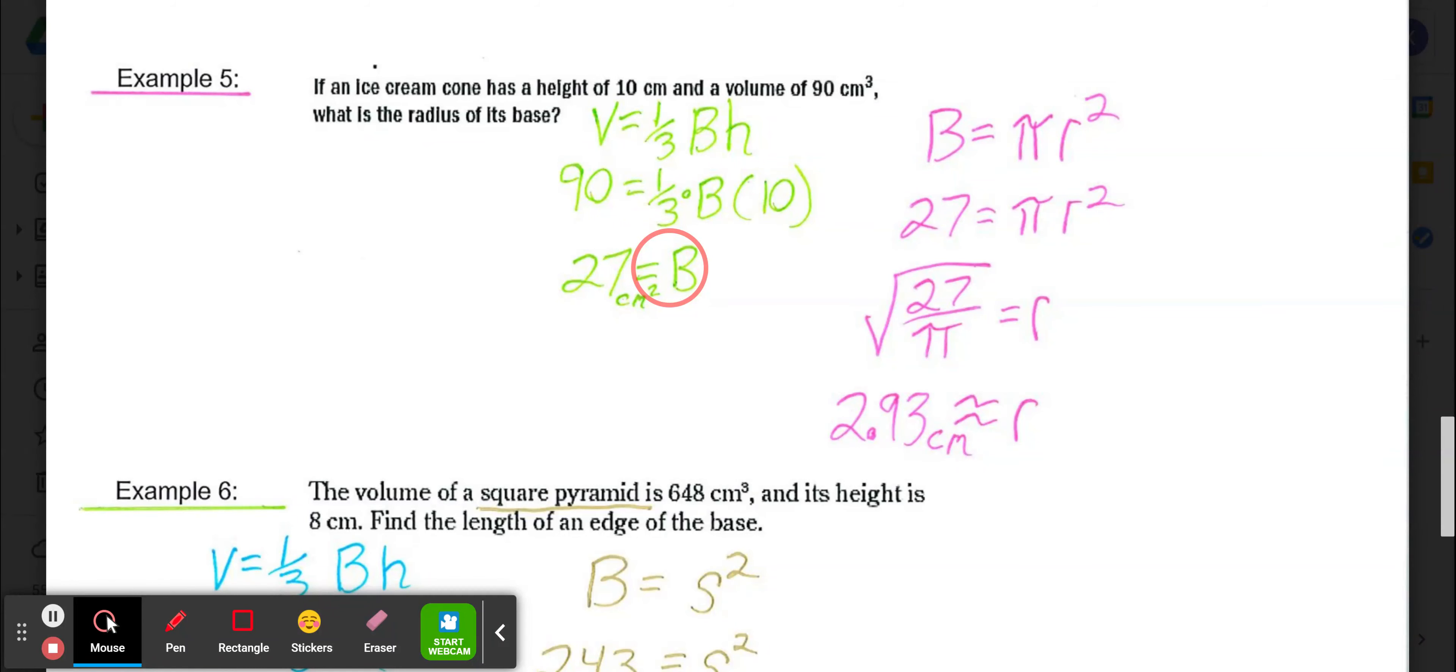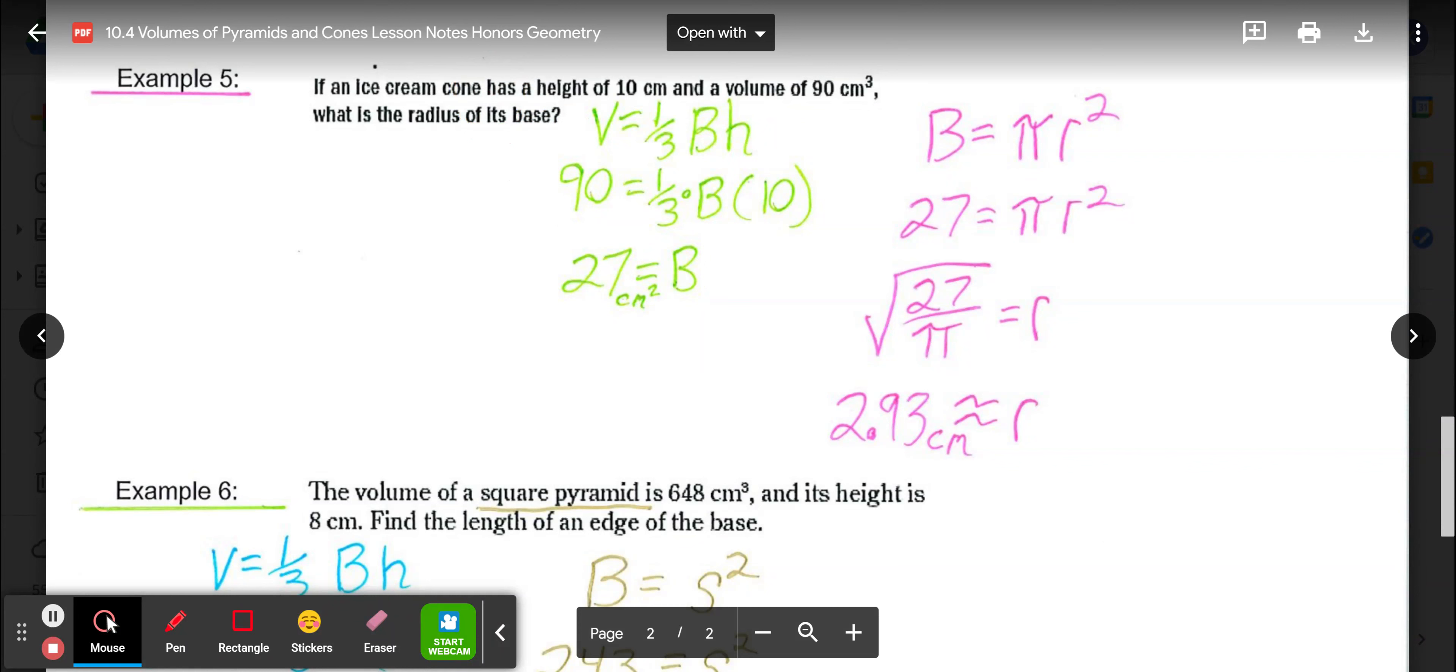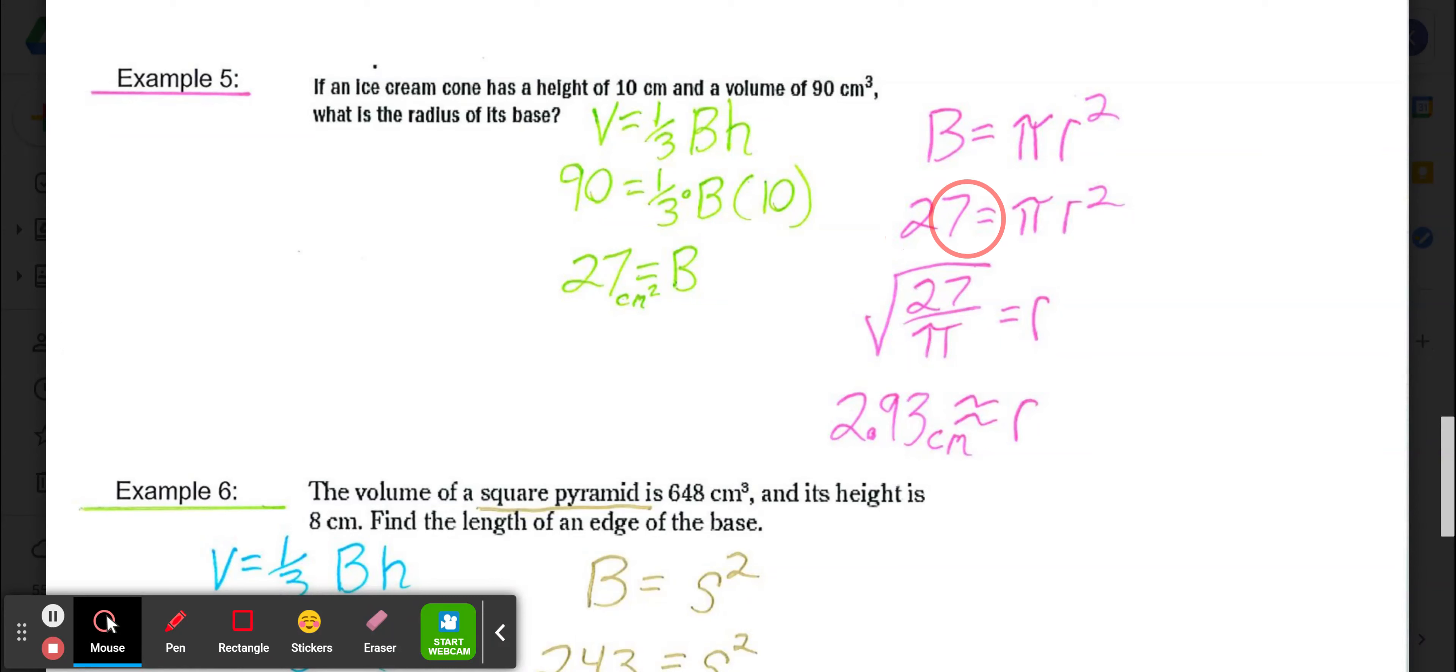Then if we know it's a cone, our base is a circle. So that area of the base formula would be π times radius squared. If we know that area was 27, we can use that formula to find our radius. We have 27 equals π times radius squared. If we divide by π and then square root, we'll get our radius. So our radius is equal to the square root of 27 over π, which is approximately 2.93 centimeters.